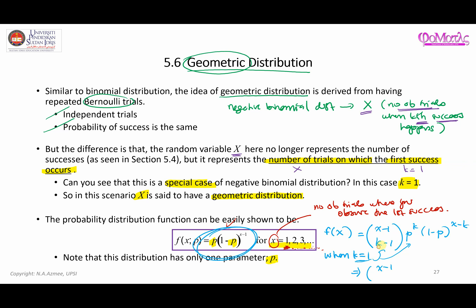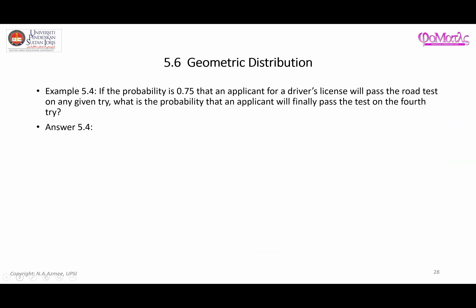Substituting k equals one, we get x minus one choose zero, which equals one, times p to the power of one, times (1-p) to the power of x minus one. Since x minus one choose zero equals one, this simplifies directly to p(1-p)^(x-1), giving us the probability distribution function for the geometric distribution.